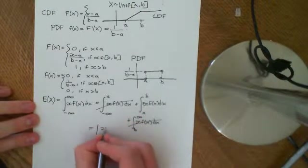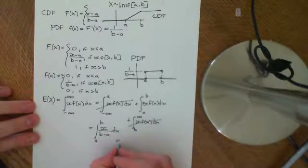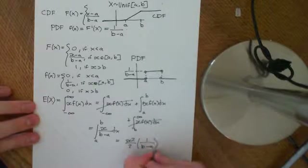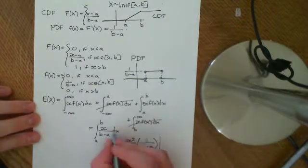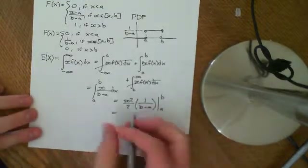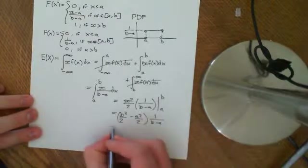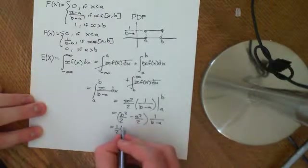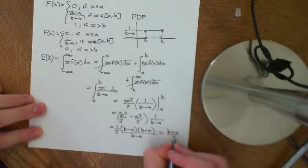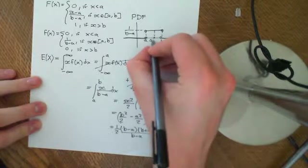Ignoring the endpoints, this equals the integral from A to B of x/(B − A) dx. The antiderivative of x is x²/2, so we evaluate [x²/(2(B − A))] from A to B, giving (B² − A²) / (2(B − A)). Factoring gives (B − A)(B + A) / (2(B − A)) = (A + B)/2. So the expected value is the midpoint between A and B — which is quite expected.